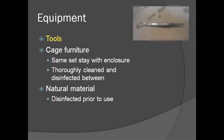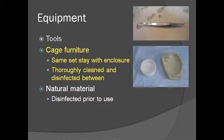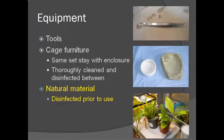Tools and cage furniture can be easy ways to transmit pathogens from one tank to the next. Tools should be cleaned and disinfected between enclosures. Ideally, the same set of cage furniture such as logs, plants, and bowls should stay with the same enclosure and not be shared. If cage furniture is shared between enclosures, it should also be thoroughly cleaned and disinfected prior to introduction into a new enclosure. Natural materials that could have been exposed to free-ranging amphibians should also be cleaned and disinfected prior to use.